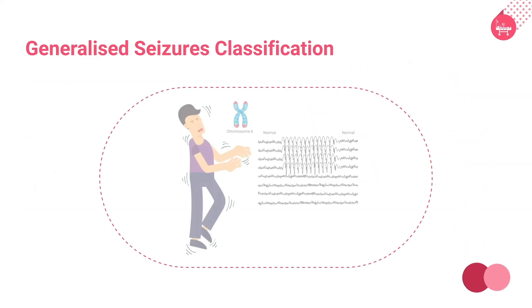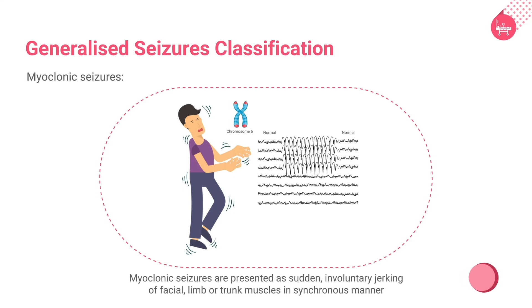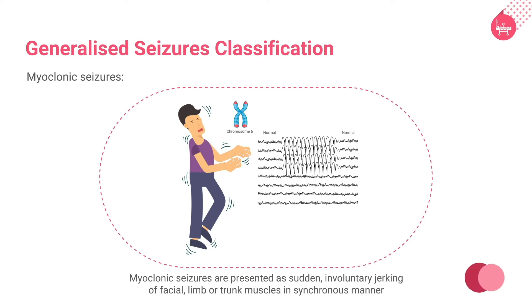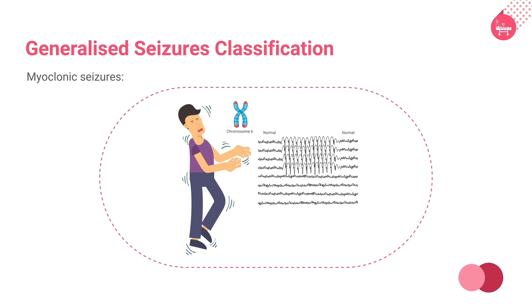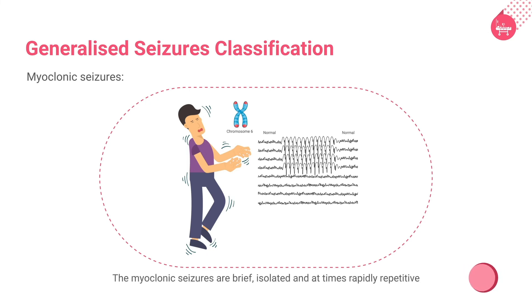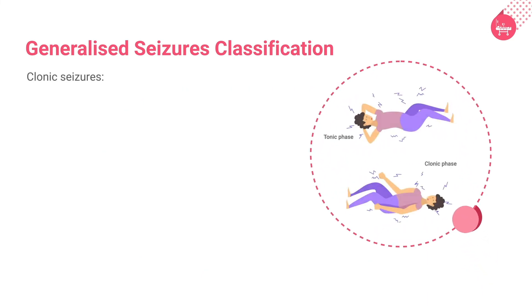The next category is myoclonic seizures, which are sudden involuntary jerking of facial, limb, and trunk muscles in a synchronous manner. These seizures are brief and isolated, but can also be rapidly repetitive.